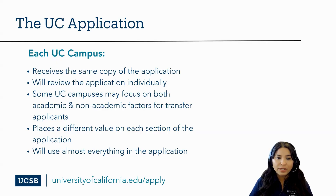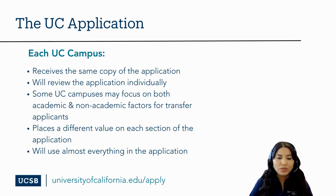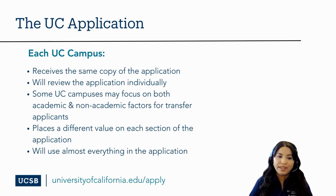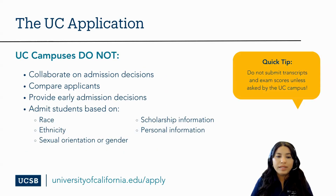Selection is determined by academic factors such as GPA and coursework, and non-academic factors such as activities, awards, involvements, and leadership experience. Some UC campuses may focus on both academic and non-academic factors for transfer admissions, while others may focus primarily on academics. Each UC campus places a different value on each application section, and we evaluate your achievements in light of the opportunities that were available to you. When reviewing your applications, the UC campuses will use almost everything — we don't ask a question that we don't want the answer to. UC campuses do not collaborate on admissions decisions or compare applicants to one another, and we do not provide early admissions decisions.